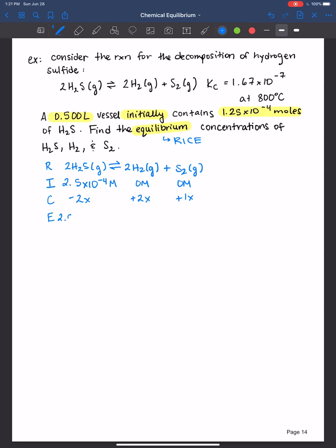For hydrogen sulfide, it would be 2.5 times 10 to the negative 4th minus 2x. Hydrogen gas would be 0 plus 2x, so therefore 2x. And sulfur would be 0 plus 1x, and so just x here. What do we need to do next? Once we've done our RICE table, we need to write down the equilibrium constant expression.